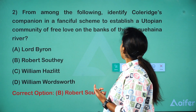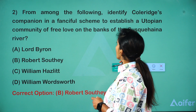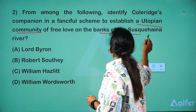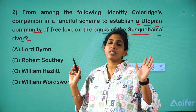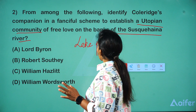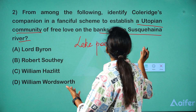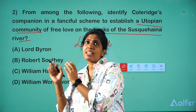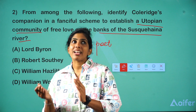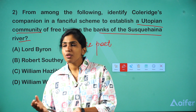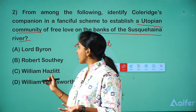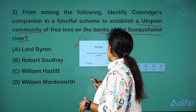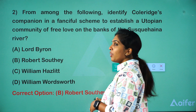Coming to the second question: From among the following, identify Coleridge's companion in a fanciful scheme to establish a utopian community of free love on the banks of the Susquehanna River. The options given are Lord Byron, Robert Southey, William Hazlitt, and William Wordsworth. The right answer is Robert Southey.